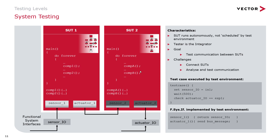To test that, we stimulate sensor one in this application, wait some time until system under test has sent bus messages to application two, and then application two writes something to our actuator value. We check the actuator value against our expected value, and that way we can test the communication between both applications.